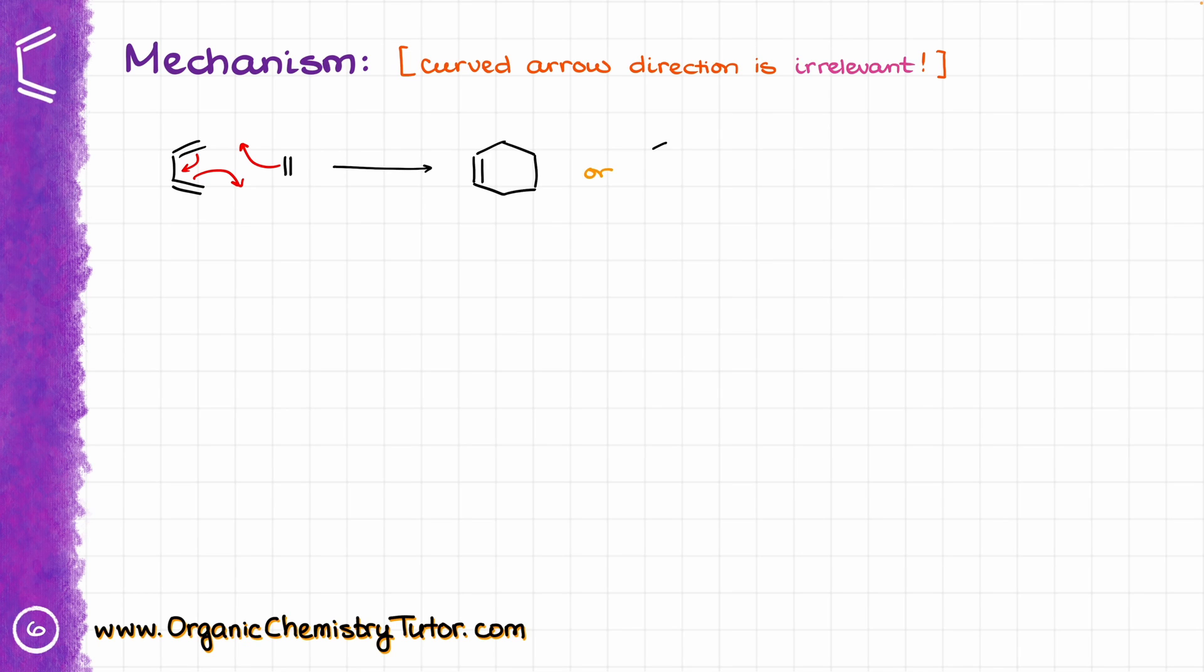Or I can take my diene, and I can react the diene with an alkene again, and now I can show my electron flow going in this direction like that, which is going to be clockwise now. And in this case, I am still going to get exactly the same product. Same cyclohexene with a double bond at the same position. So it really doesn't matter how you show your curved arrows, it is always going to be correct.